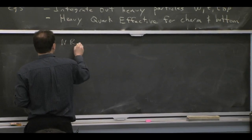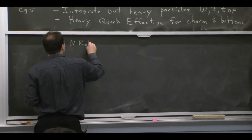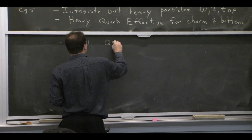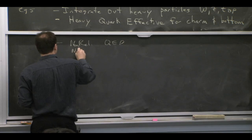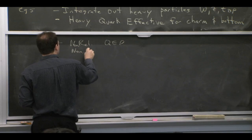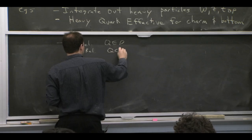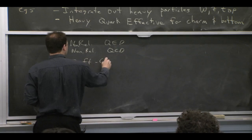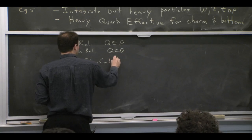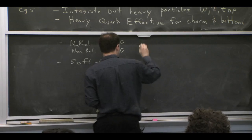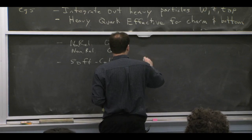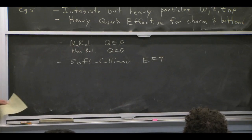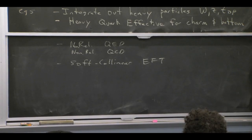Non-relativistic QED and non-relativistic QCD are also examples here. And soft collinear effective theory — one of our main subjects — is also an example of this type, where we can just start in QCD, do an expansion, and get the effective field theory.